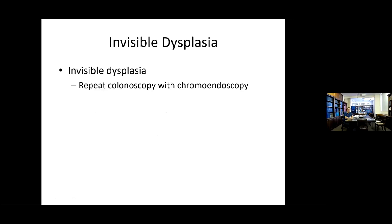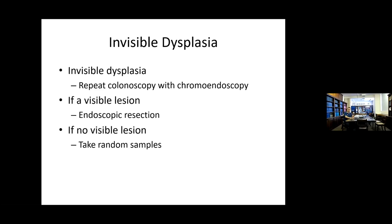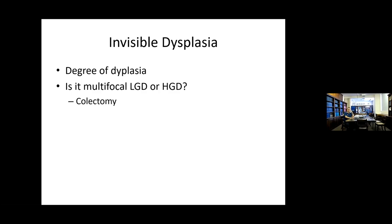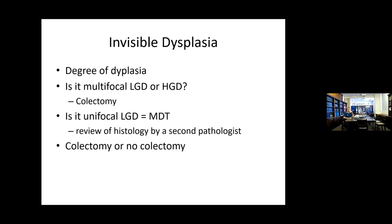If it's invisible dysplasia — you've done surveillance and you've got some dysplasia on those 32 biopsies — the suggestion is that if you can't see anything, you repeat the colonoscopy with chromo to see if you can find a visible lesion, either polypoid or non-polypoid, that you can deal with endoscopically. If there's no visible lesion you take random samples again. Then it depends on the degree of dysplasia — if it's multifocal low-grade or high-grade, you may need to consider colectomy. If it's unifocal low-grade dysplasia, you need an MDT and a review by a second pathologist, because sometimes LGD is called by one pathologist and not by another.